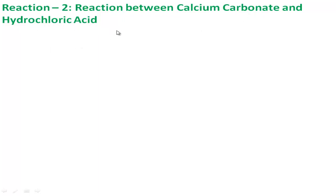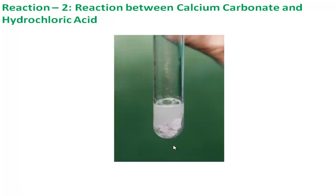Reaction two is the reaction between calcium carbonate and hydrochloric acid. Hydrochloric acid is an aqueous solution and a chemical substance, while calcium carbonate is a solid substance. In a test tube, you first take some hydrochloric acid solution, then insert pieces of calcium carbonate into the hydrochloric acid solution.